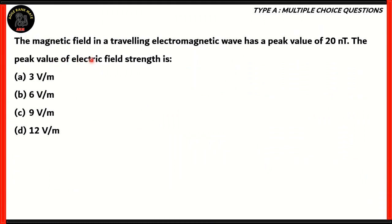The magnetic field in a traveling electromagnetic wave has a peak value of 20 nanotesla. The peak value of electric field strength is: 3 V/m, 6 V/m, 9 V/m, or 12 V/m.